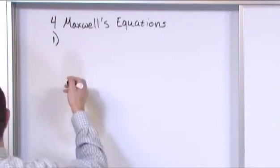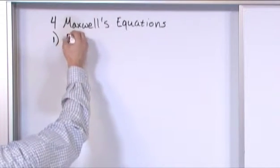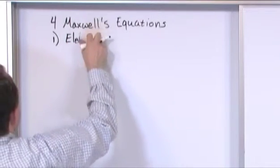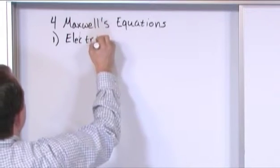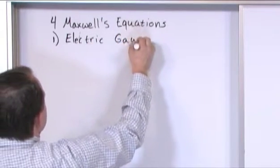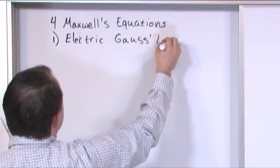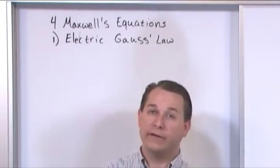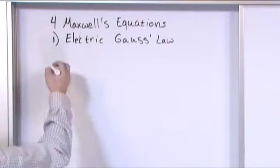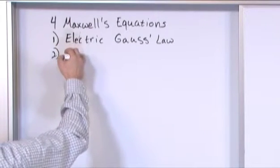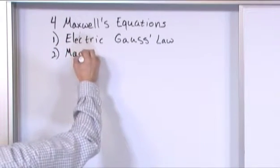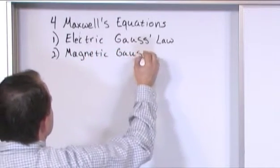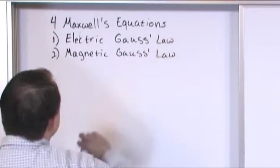So in no particular order, we have what we call the electric Gauss's law. By the way, that's what we're going to study today. We'll go into this whole lecture about this, but that's number one on the board here. And then we have what we call the magnetic Gauss's law. We'll study that quite a bit later.